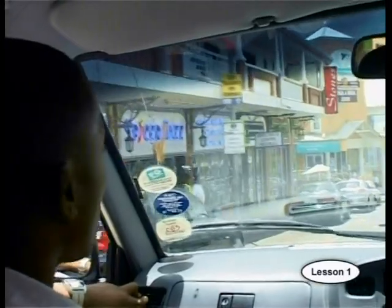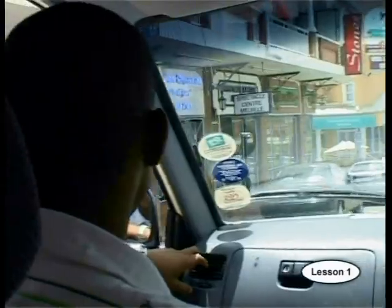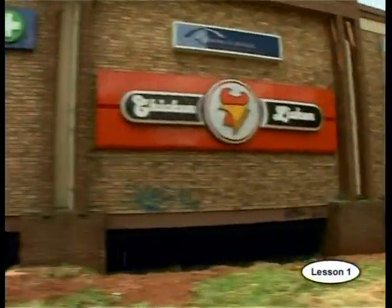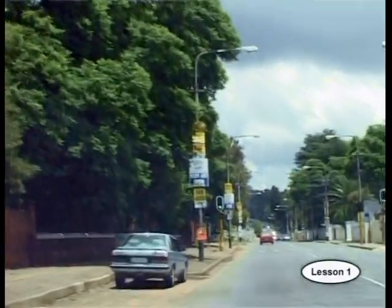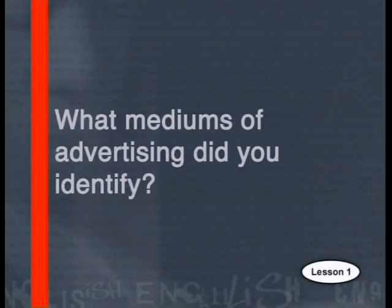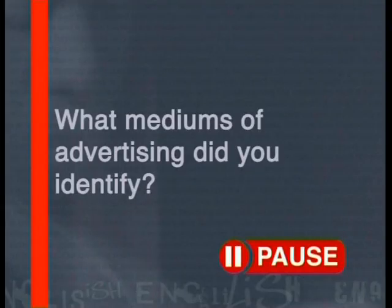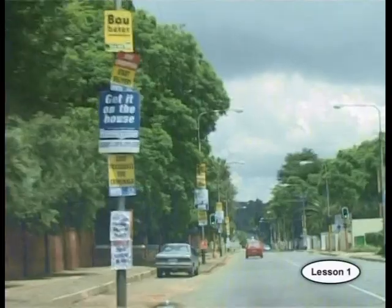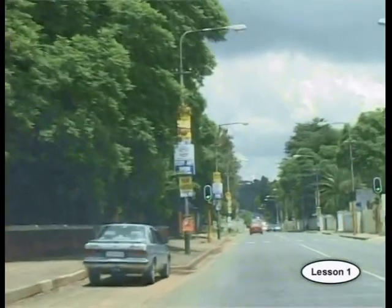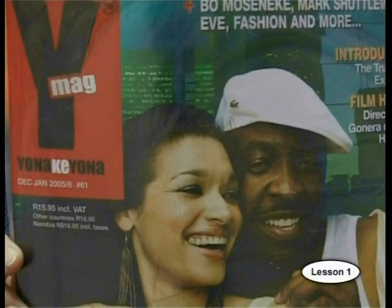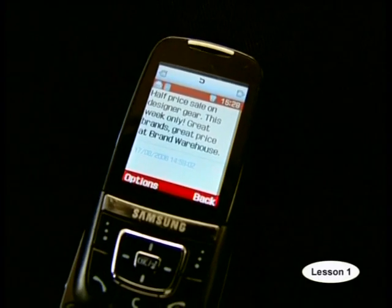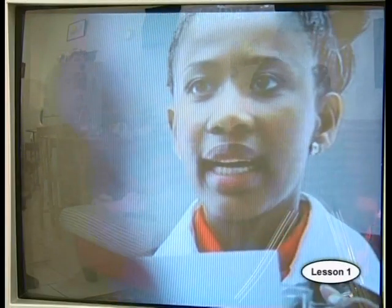What mediums of advertising did you identify? In this sequence, a range of advertising mediums were shown including radio, posters, billboards and signs, catalogues and magazines, cellular phones, television and newspapers.